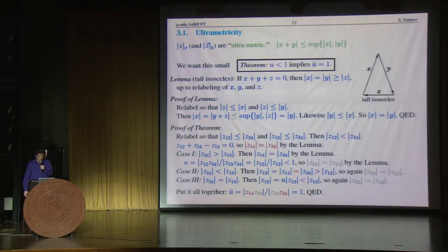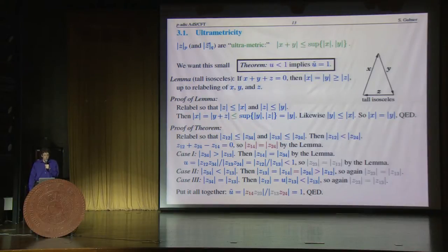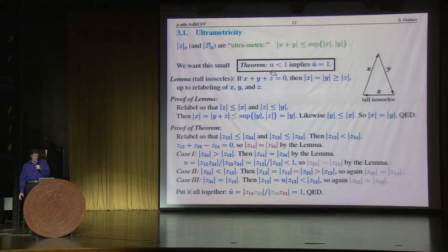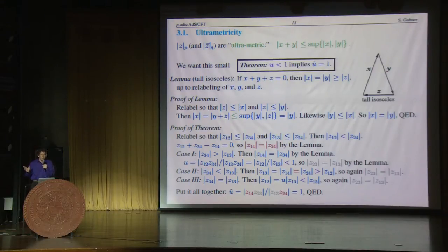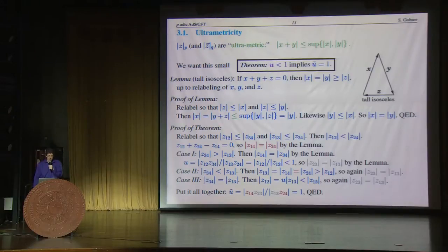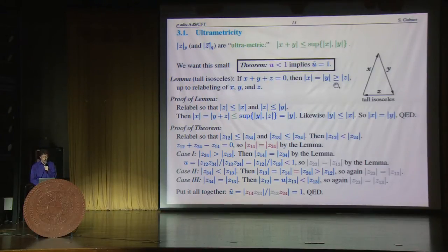Now let me tell you about ultrametricity. P-adic norms are ultrametric in the sense that the p-adic norm of X plus Y is less than or equal to the supremum of the norms of X and Y. This seemingly innocent inequality implies a small theorem: if the cross-ratio U is less than 1, then the other cross-ratio U-tilde equals 1. How can it be that from only inequalities we recover this equality? Well, the key is the so-called tall isosceles lemma. Suppose you have X plus Y plus Z equals 0; then up to relabeling, the norm of X equals the norm of Y, greater than or equal to the norm of Z.